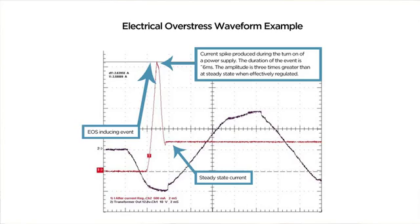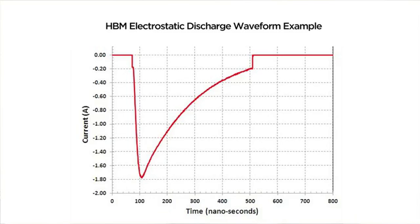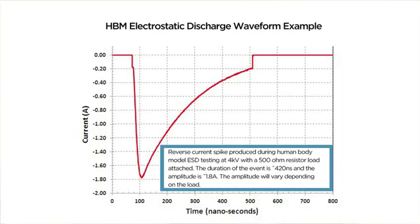EOS is differentiated from ESD, or electrostatic discharge, which is primarily an issue during manufacturing or handling. ESD events are usually measured in tens of microseconds.